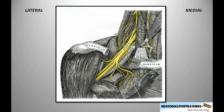These start from the roots which come together — the nerve roots being C5, C6, C7, C8, and T1. Sometimes they receive an innervation from C4, in which case it is called a prefixed brachial plexus, and sometimes from T2, in which case it is called postfixed.